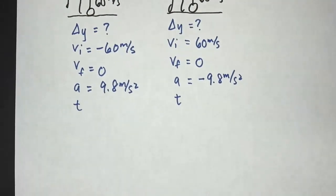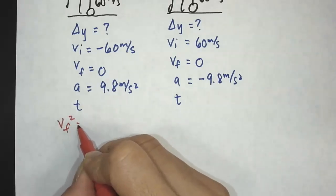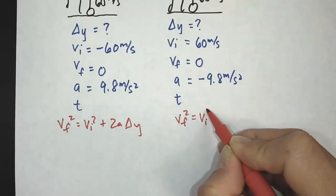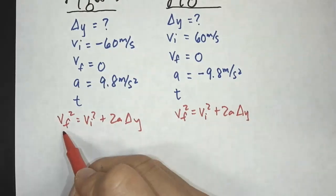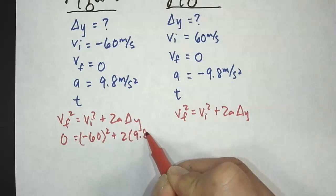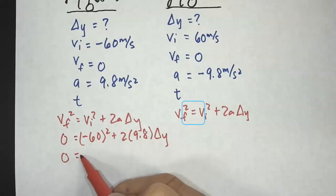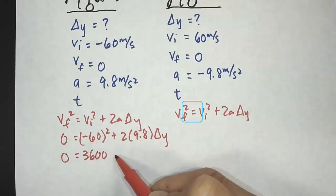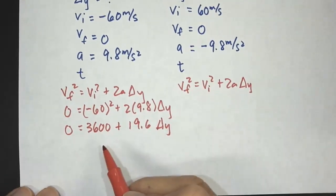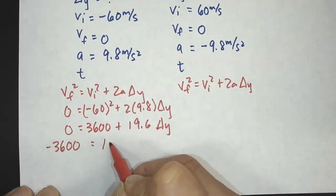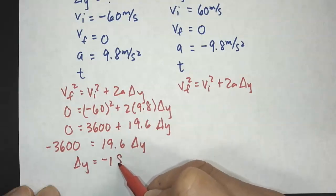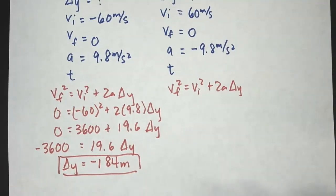I'll use the kinematic equation: vf² = vi² + 2a·ΔY. For the down-positive case: 0 = (−60)² + 2(9.8)ΔY, which gives 0 = 3600 + 19.6·ΔY. Subtracting 3600 from both sides and solving for ΔY gives negative 184 meters — meaning the ball goes 184 meters in the negative (upward) direction.